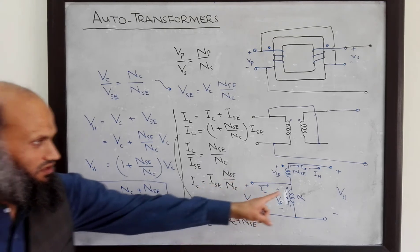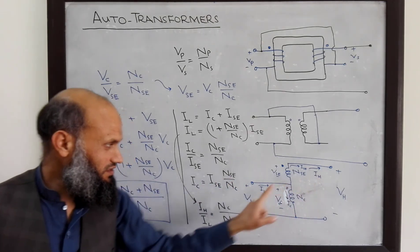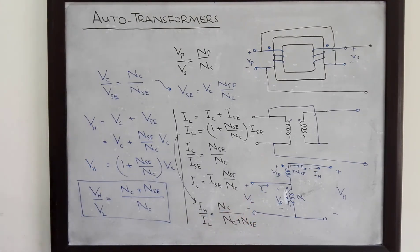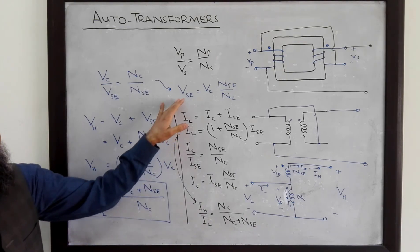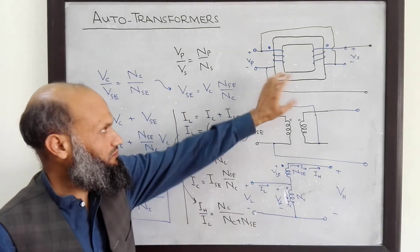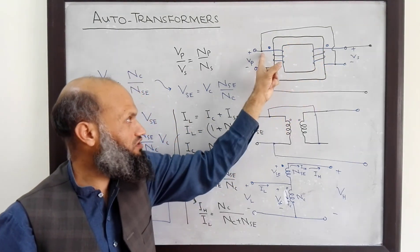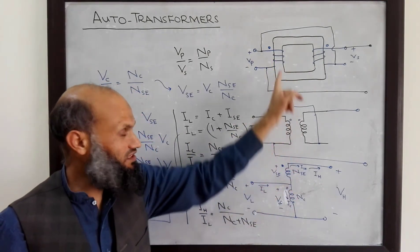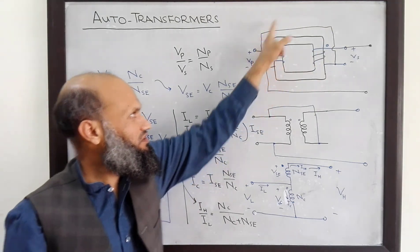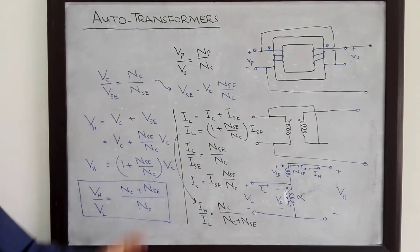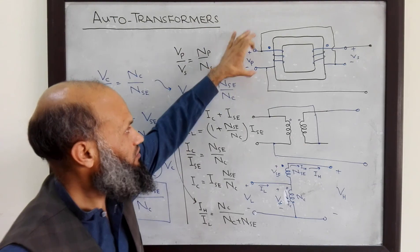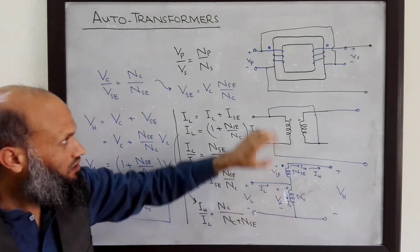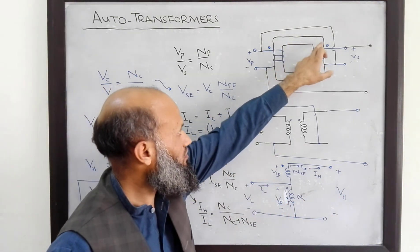So in summary, in the case of an autotransformer, there is not only magnetic coupling between the common winding and series winding. In addition to magnetic coupling, there is also an electrical connection. So electrical power flows from the voltage source to the load connected, not only through the magnetic field, but also through the electrical connections.